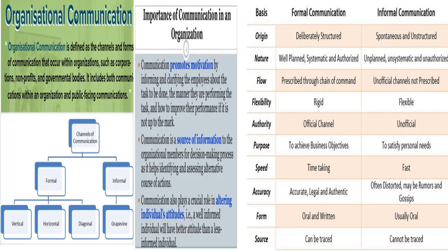Communication promotes motivation, acts as a source of information, and helps in altering individual attitudes. Differences between formal and informal communication: formal is deliberately structured while informal is spontaneous. Formal is rigid but informal is flexible. Formal follows official channels while informal is unofficial. Formal is time-consuming while informal communication is fast. Formal communication is accurate, legal, and authentic, while informal can be distorted and create rumors and gossips. Formal communication can be written or verbal; informal is usually oral only. Sources can be traced in formal communication but cannot be traced in informal.